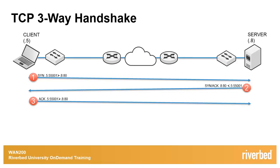Finally, this topic is paramount in learning how to successfully deploy and troubleshoot the Riverbed Steelhead products. For more details on the TCP three-way handshake, be sure to take a look at RFC 793. For more details on how the TCP three-way handshake is integral to your Steelhead skills, be sure to watch more videos in Riverbed University on-demand training. Thanks for watching.